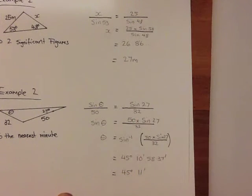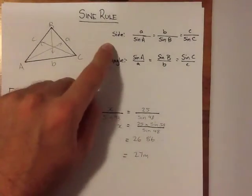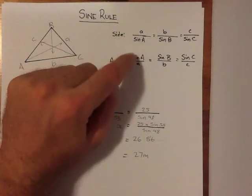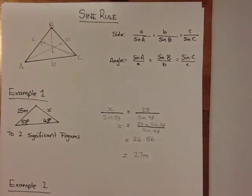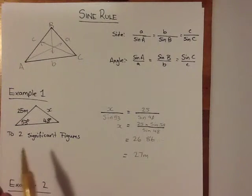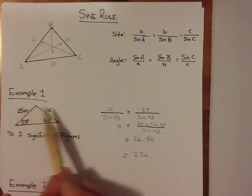So just recapping the sine rule, our unknown is always going to be on top of our fraction. We need four pieces of information, and those four pieces of information are always two angles and two sides.